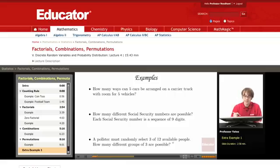So the first one that we're looking at: How many ways can five cars be arranged on a carrier truck with room for five vehicles? So maybe you can draw the bins here to represent the spots on the truck.